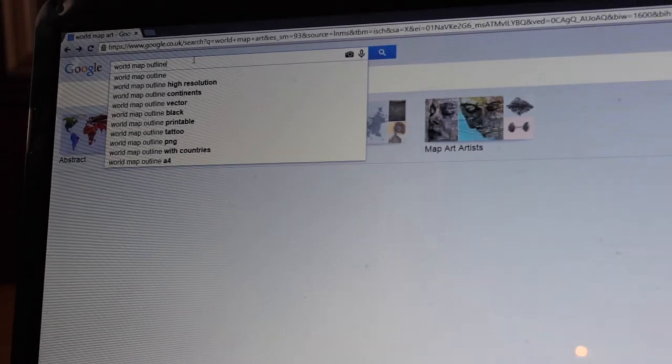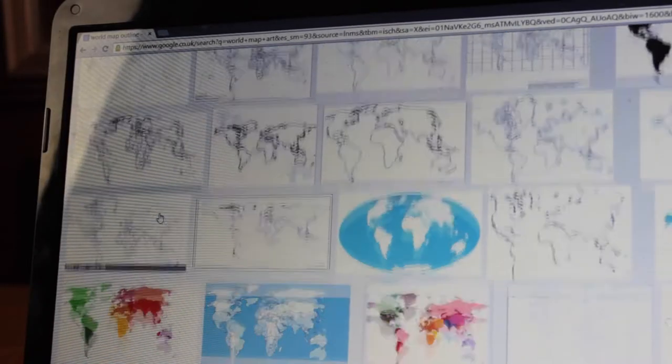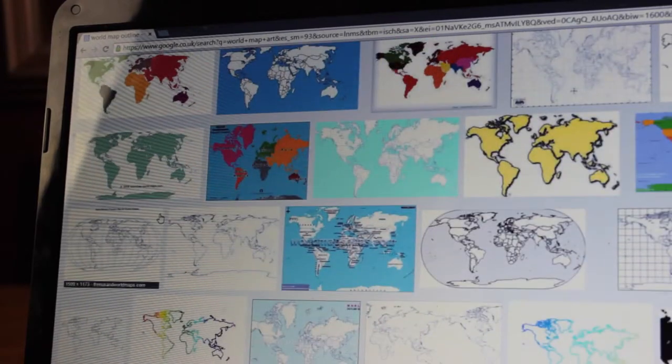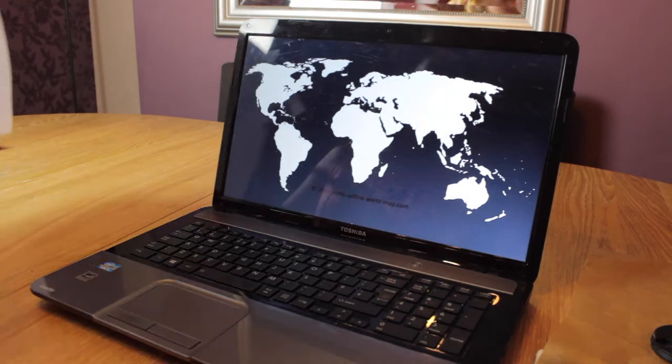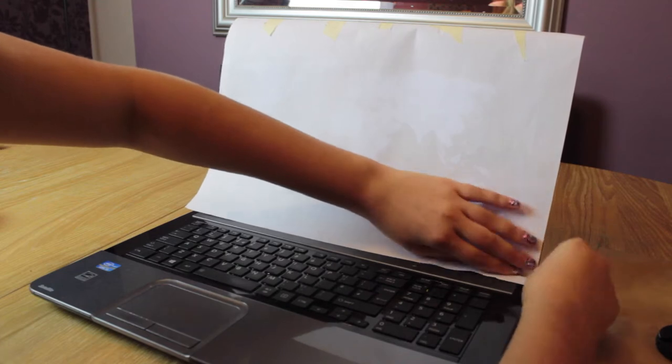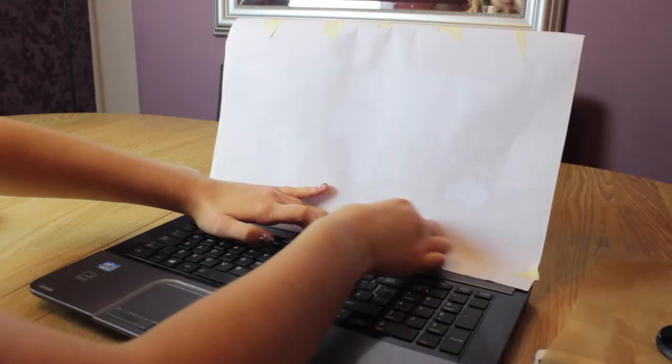The first thing you want to do is google 'world map outline' and a bunch will come up. The one I went for had a black background with white outline which made it easier to trace. You also need to make sure your laptop or computer brightness is turned up all the way. Then take some masking tape and fix your paper onto your screen so it doesn't move.